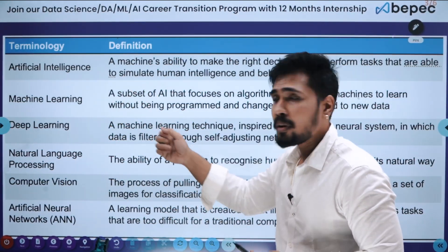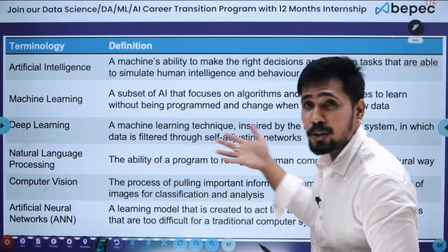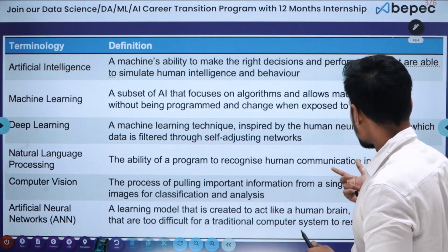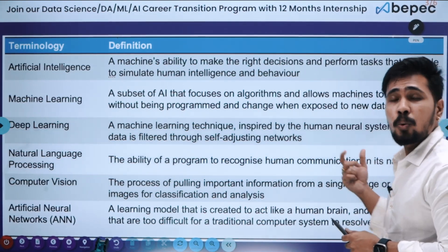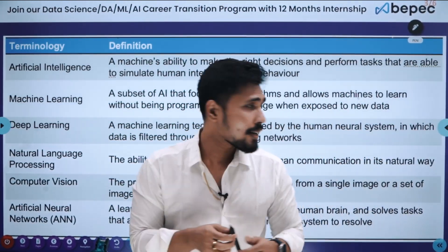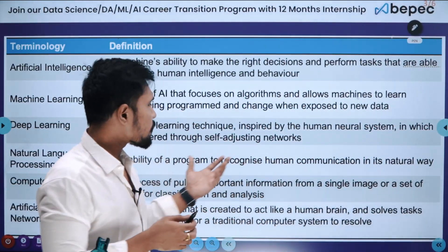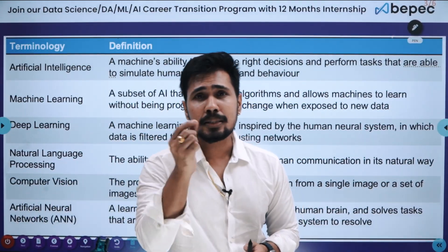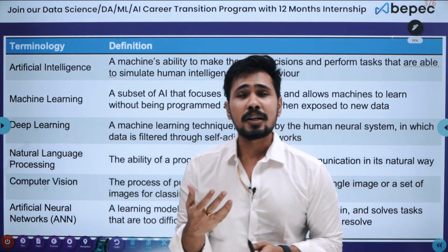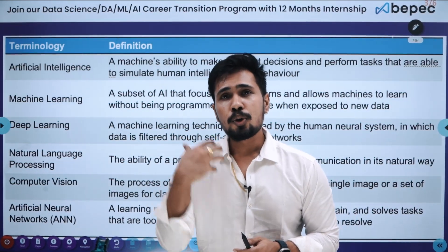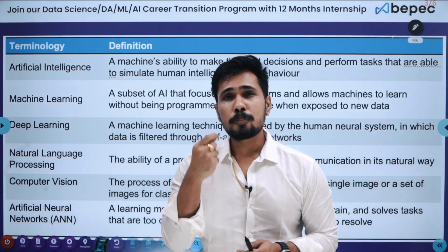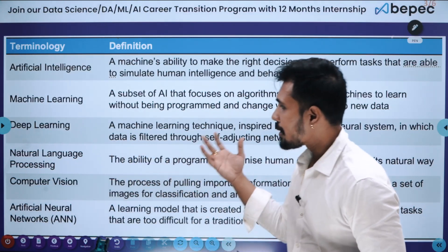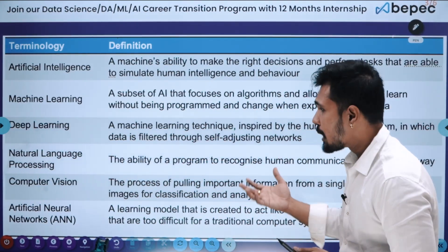Next is Natural Language Processing (NLP) — the ability of a program to recognize human communication in its natural way. Examples of NLP include Siri and Google Assistant, which are able to understand our human language. In order to pre-process human language — whether English or any other language — we use NLP, natural language processing.